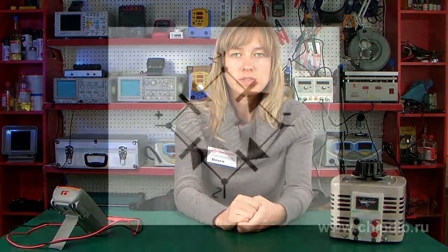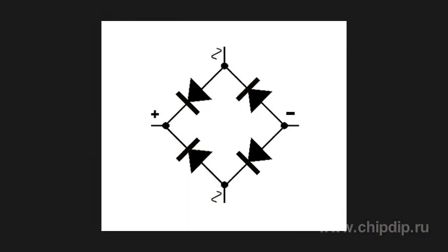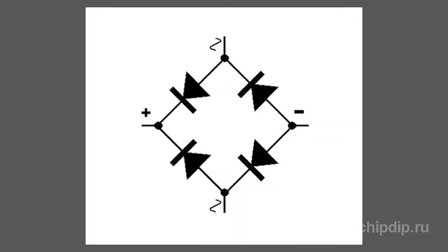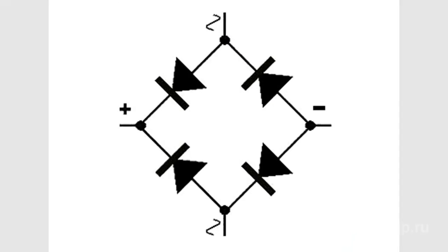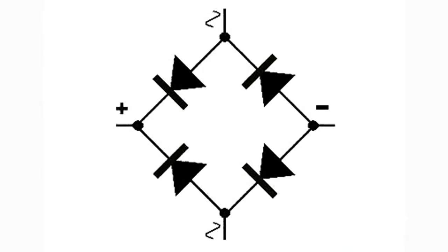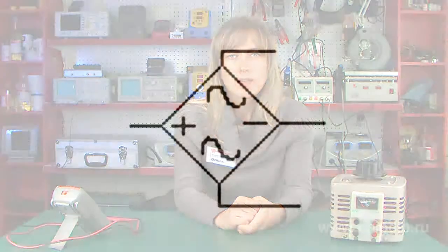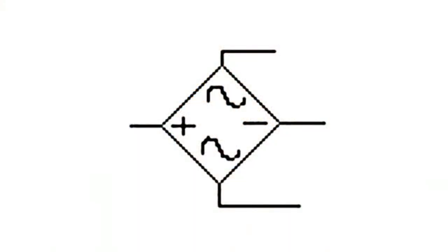Diode bridges may be of two types depending on the design. If a bridge is composed of four diodes, it is designated like this, showing the alternating voltage connection terminals and the polarity of rectified voltage. Circuits of this kind are generally used in rectified assemblies. This figure shows a bridge of the same type but with four diodes inside a single case.